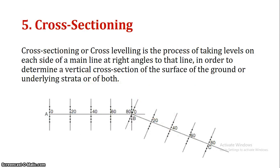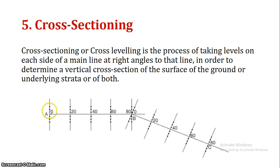Next is cross-sectioning. When doing profile leveling along a center line, for a highway the center line readings alone are not enough. At each point along the center line, we also take readings to the left and right, perpendicular to the center line. These cross-section details are plotted for the full width of the road.